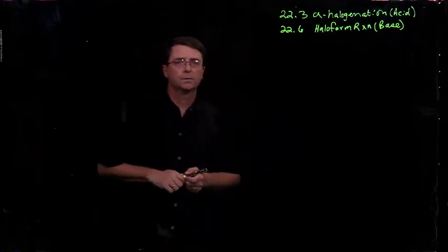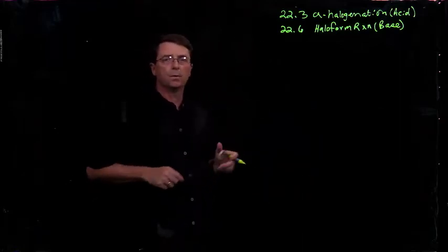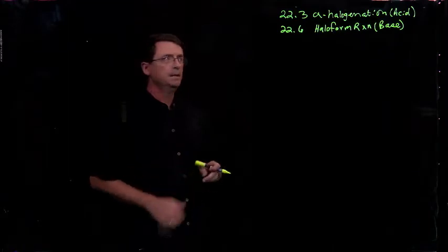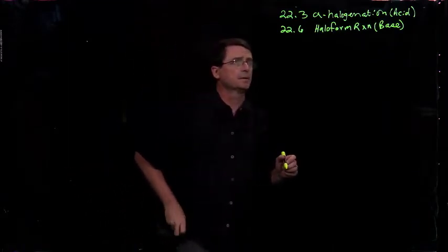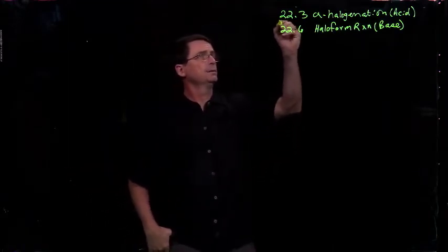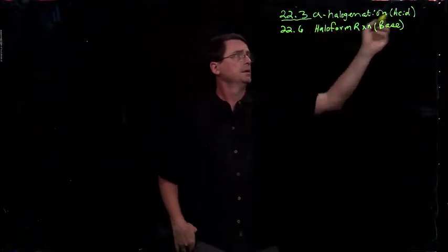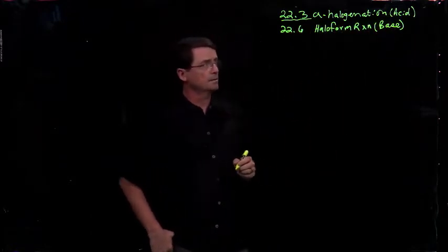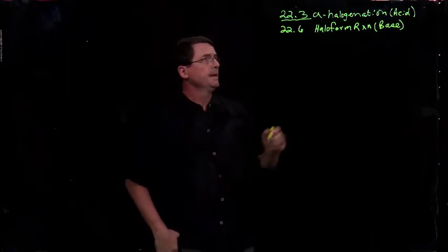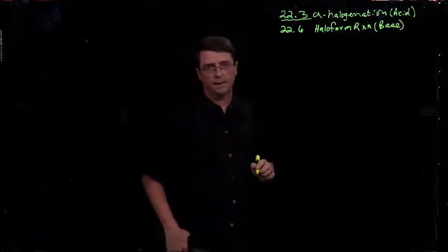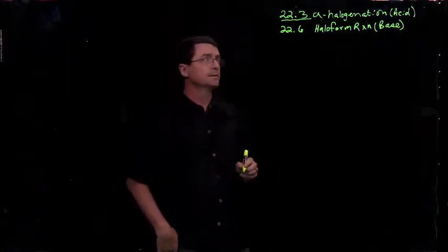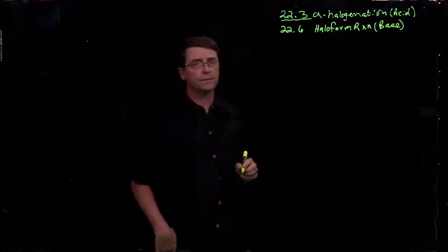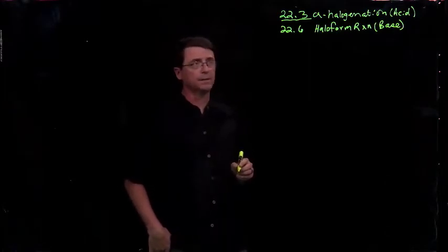All right, sections 22.3 and 22.4. I'm going to discuss sections 22.3 alpha halogenation of aldehydes and ketones and base catalyzed halogenation together. There's a significant difference between the two when you use acid or base, and we'll take a look at that.